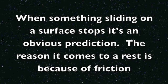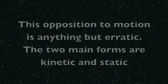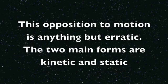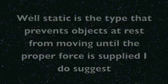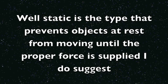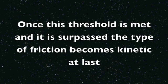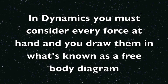When something sliding on a surface stops, it's an obvious prediction. The reason it comes to rest is because of friction. This opposition to motion is anything but erratic. The two main forms are kinetic and static. Static is the type that prevents objects at rest from moving until the proper force is applied. Once this threshold is met and surpassed, the type of friction becomes kinetic at last.